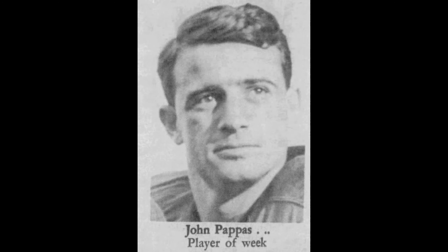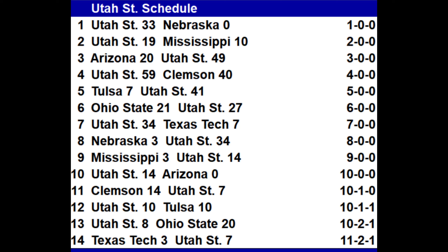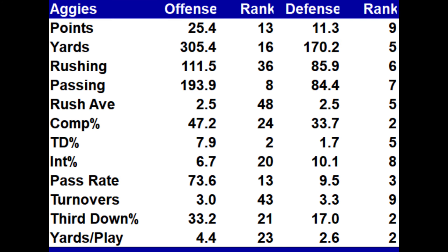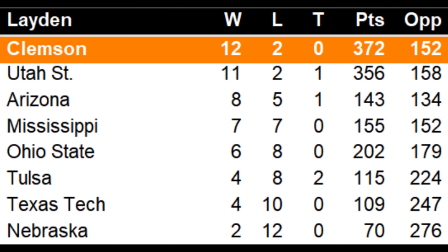For a while it seemed that Utah State would finish on top of the Layden league. Utah State was led by legendary quarterback John Pappas in a pass-heavy offense. After winning an impressive 10 straight, Utah State stumbled — losing to Clemson, tying Tulsa, and then losing to Ohio State. It was still an impressive statistical performance from a team I never thought would win. Clemson wound up winning the division.